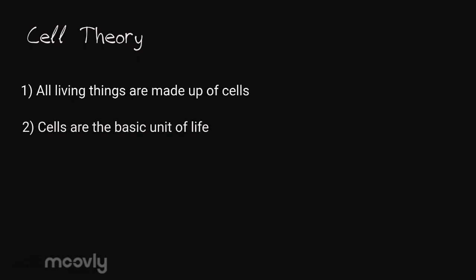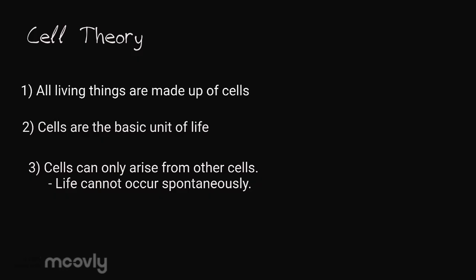Cell theory describes what we know to be true about cells. It is broken down into three main tenets. First, all living things are made up of cells. Second, cells are the basic unit of life. And third, cells can arise only from other cells.